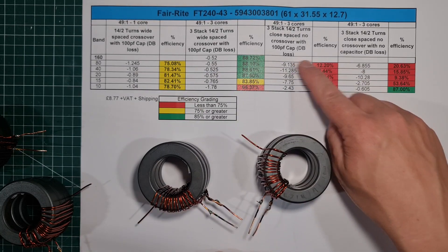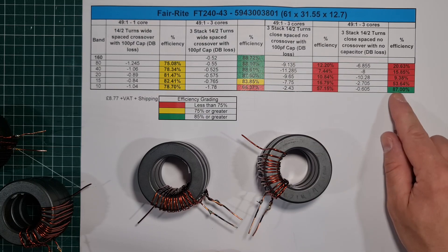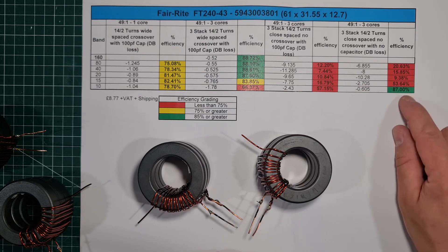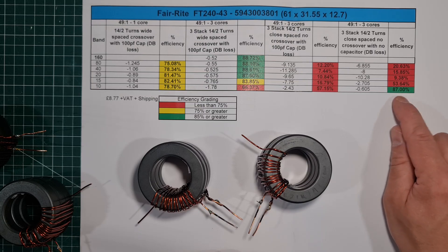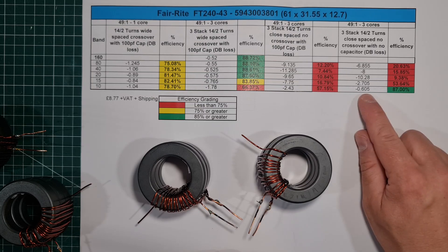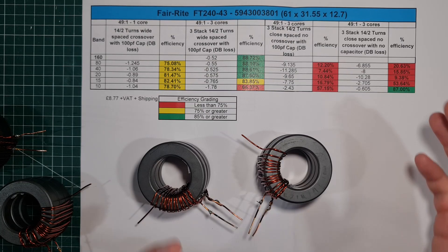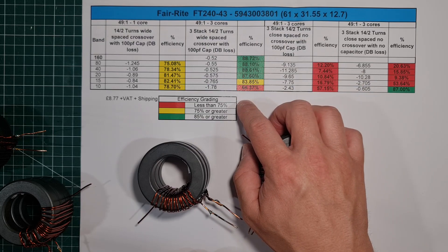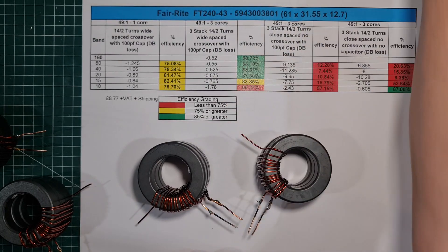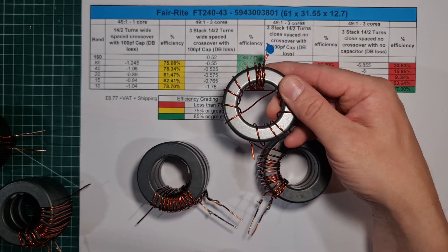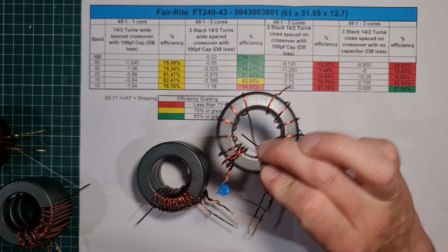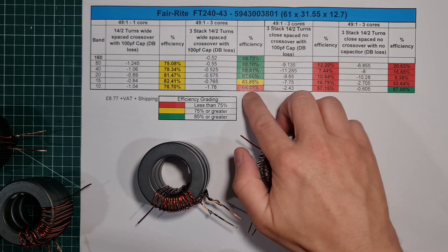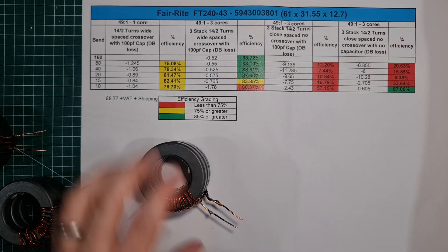Then what I did was I cut the capacitor off and I took some measurements again, and some of them actually improved, some of them decreased, and actually on 10 meters it was actually really quite efficient with just 0.6 of a dB of loss. The clear winner here is if you're going to use a three-stack of 43s, this is the winding that you want to use, your standard kind of winding that everyone uses.